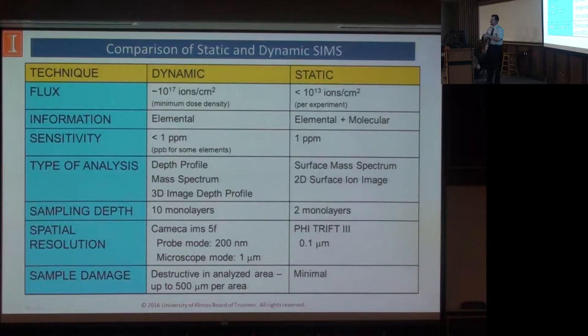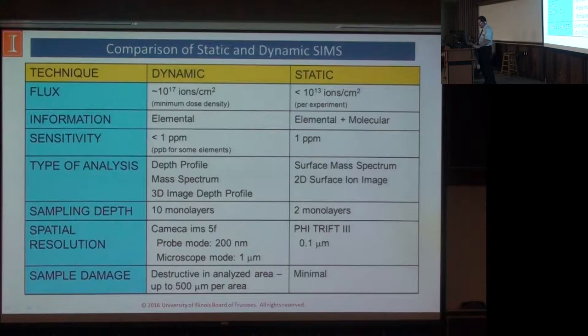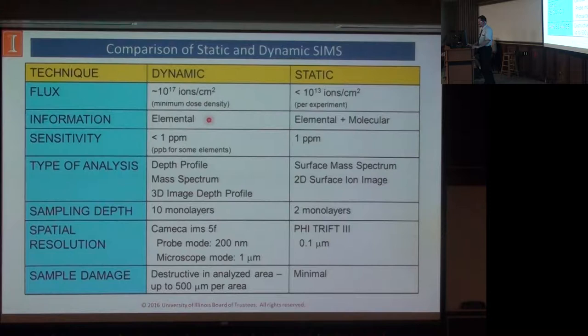In SIMS we tend to talk about two regimes: static SIMS and dynamic SIMS. Dynamic SIMS is the older of the two — you're constantly churning away and removing material. If someone asks whether SIMS is non-destructive, you can ask them how big of an area needs to be non-destructive, because we are going to make a crater, especially if you're doing dynamic work. A downside when doing all this sputtering is you tend to mix everything together, so when you're doing depth profiling you're really limited to elemental work, although there are now situations where they're getting past that. Dynamic SIMS offers very high sensitivity — parts per million type things.